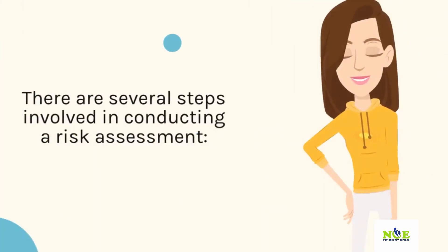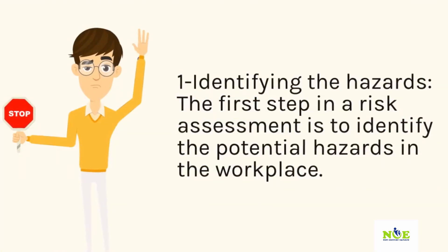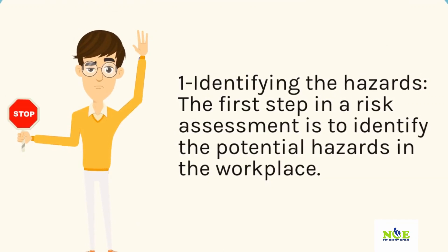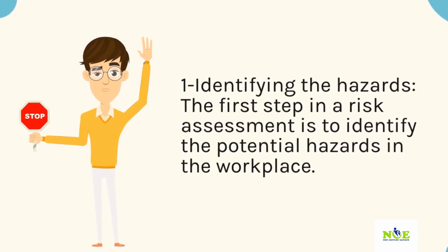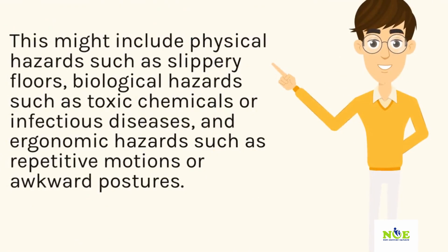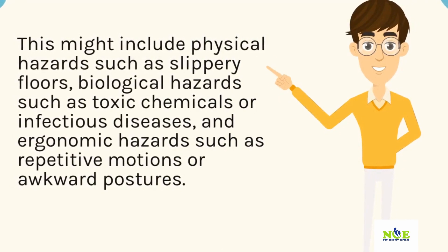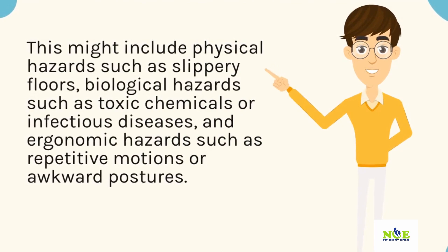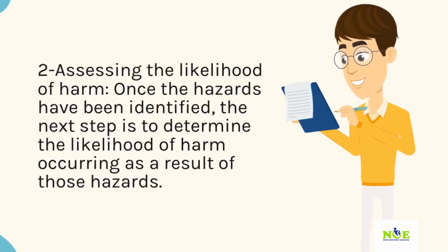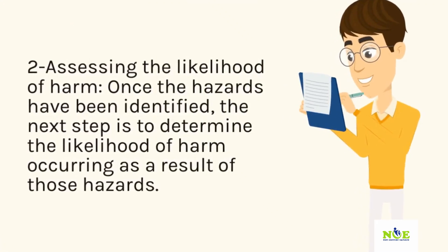There are several steps involved in conducting a risk assessment. 1. Identifying the hazards. The first step is to identify the potential hazards in the workplace. This might include physical hazards such as slippery floors, biological hazards such as toxic chemicals or infectious diseases, and ergonomic hazards such as repetitive motions or awkward postures. 2. Assessing the likelihood of harm. Once the hazards have been identified, the next step is to determine the likelihood of harm occurring as a result of those hazards.